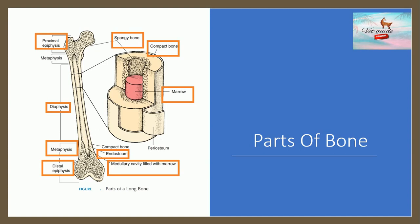The outer surface of the bone is covered with a fibrous membrane called the periosteum. The periosteum contains blood vessels, nerves, and lymphatic vessels that nourish compact bone.